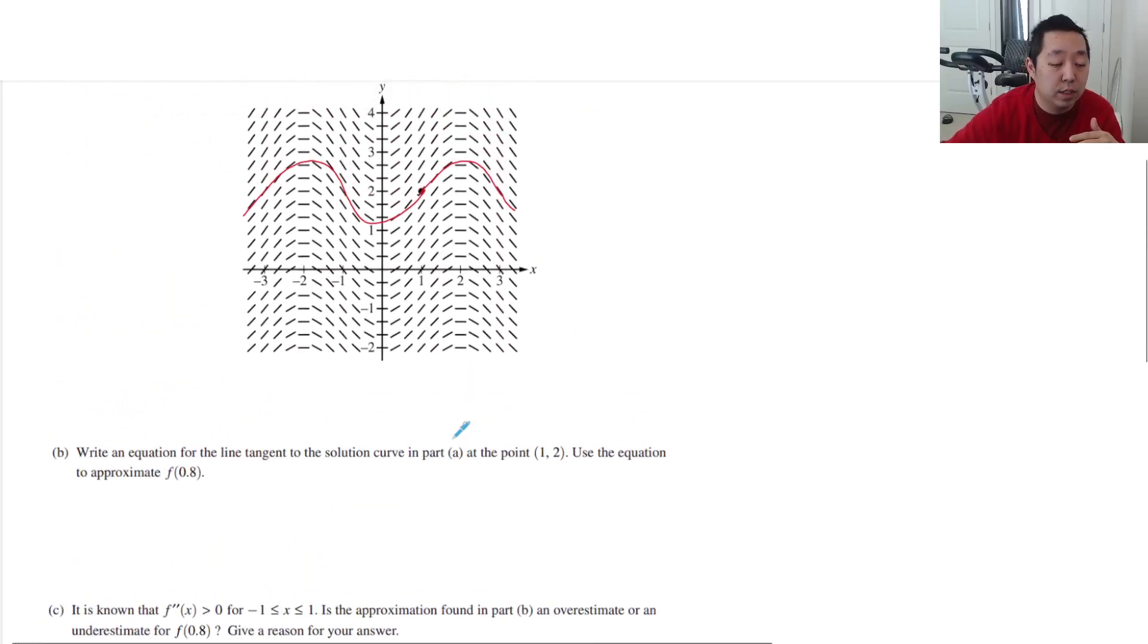Write an equation for the tangent line of the solution curve in part A to the point 1, 2. Use the equation to approximate this. Equation of tangent line, I always do the same thing: y minus y0 is m, x minus x0. In this case, you already know that it's the x and the y coordinate. That's the point.